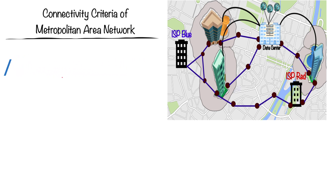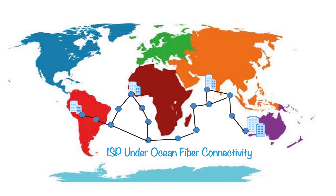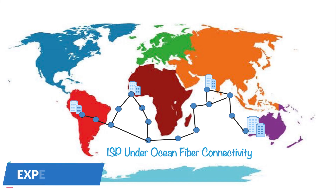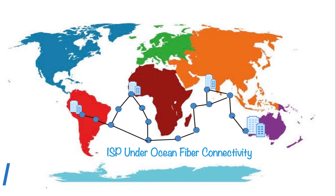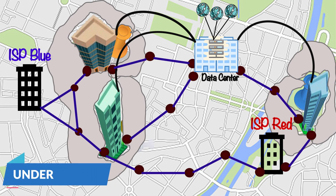For example, if you have one office in one country and another branch in a different country and you want private connectivity between them, reaching out to an ISP for this will be very expensive. It is totally up to the company — if they have such a budget they can go for private connectivity; otherwise, on average, companies with branch offices up to 50 kilometers form a metropolitan area network.